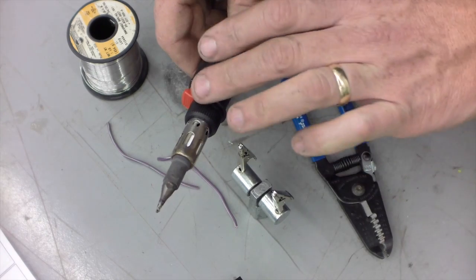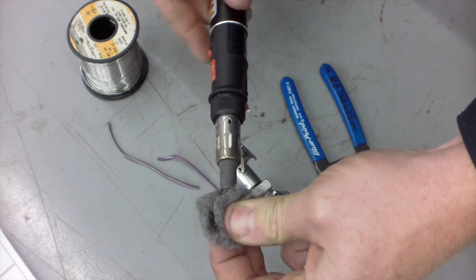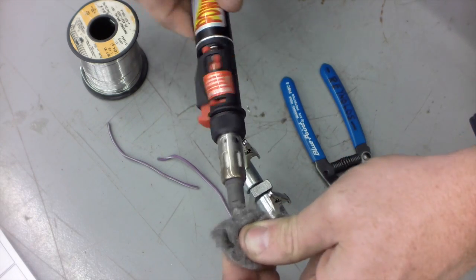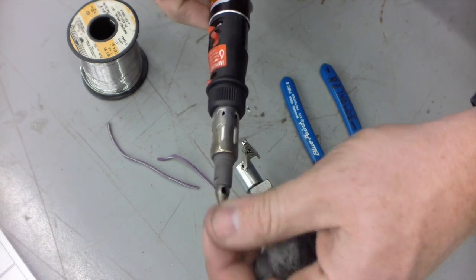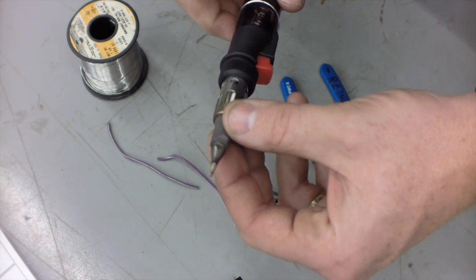First thing you want to do is clean off the tip. A lot of times what will happen when you're soldering is you get a little bit of debris stuck on the tip from the insulation. Sometimes insulation will melt, so you want to do a quick and dirty inspection of the tip before you begin the soldering process.